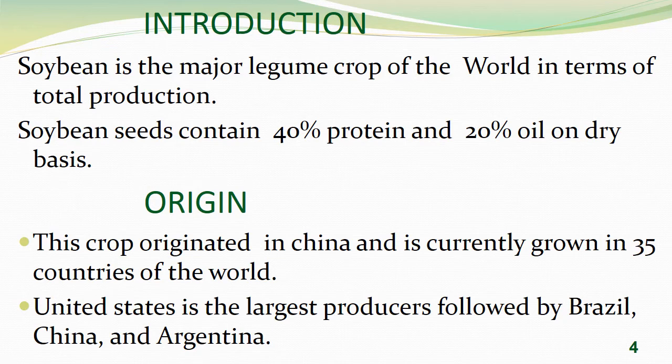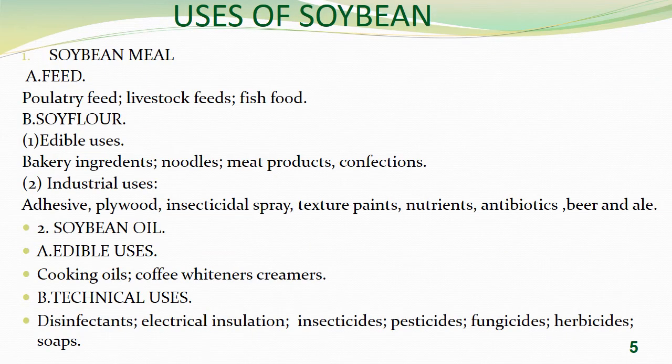Soybean is a major legume crop of the world in terms of total production. The seed contains 40% protein and 20% oil on a dry weight basis. The origin of soybean is China, and it is currently grown in 35 countries. The United States is the highest producer, followed by Brazil, China, and Argentina.